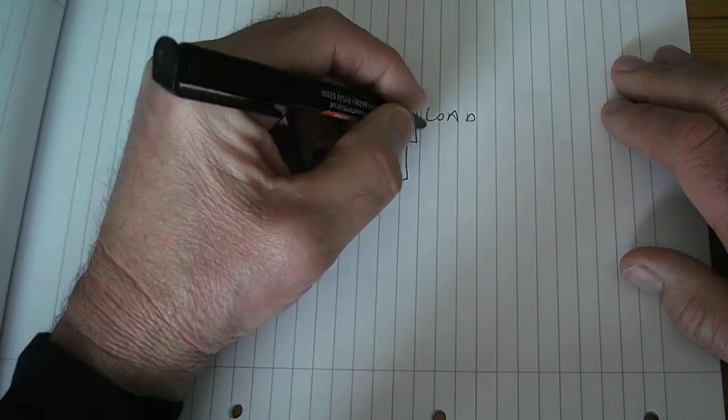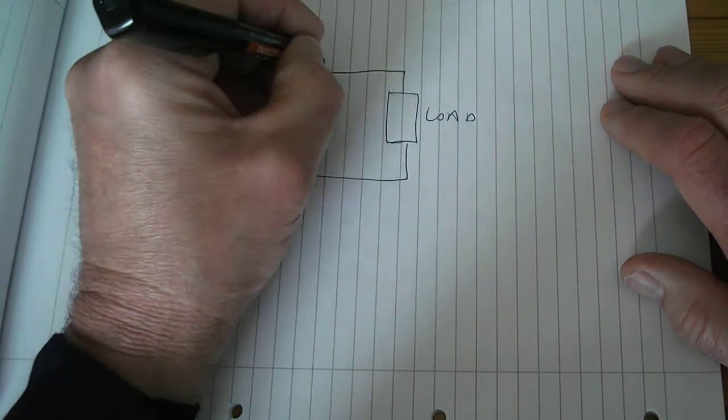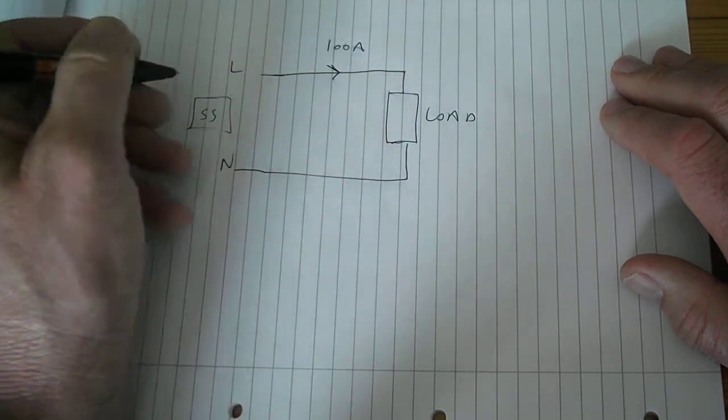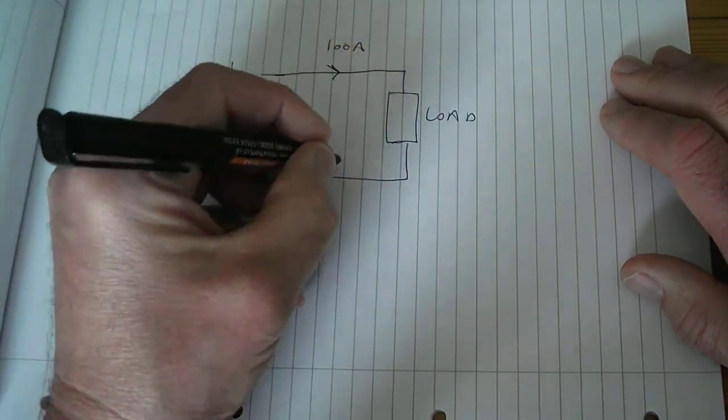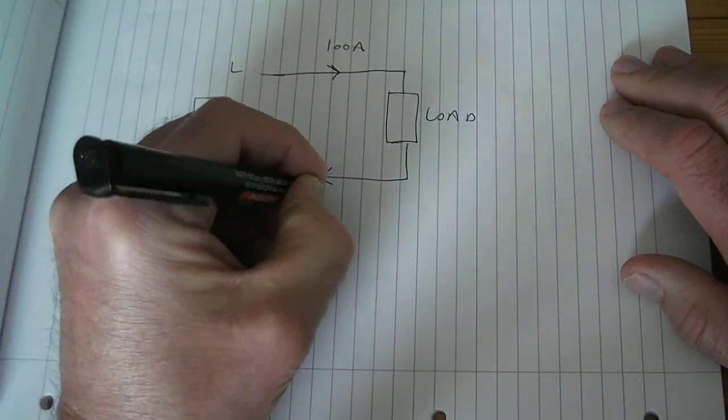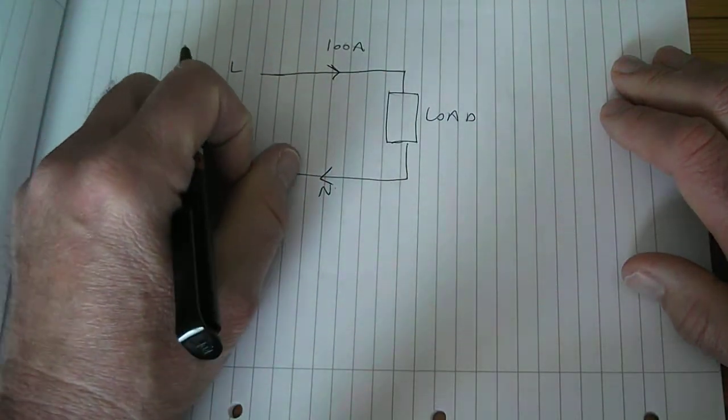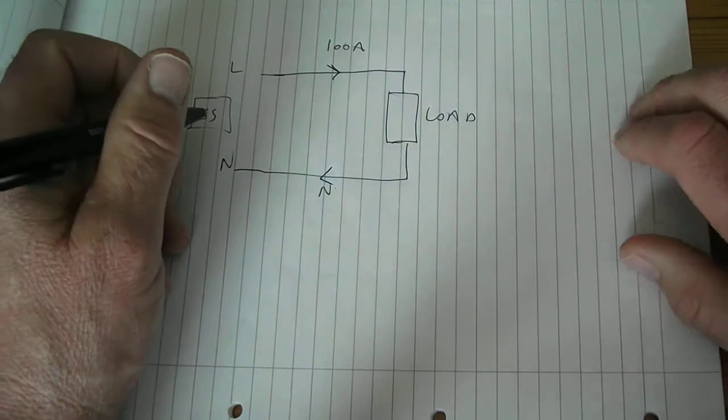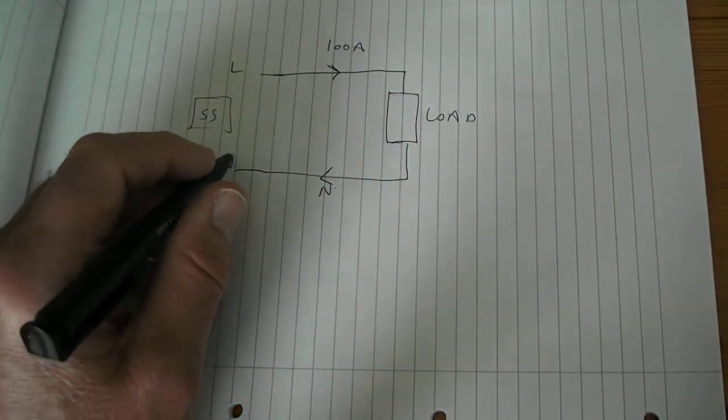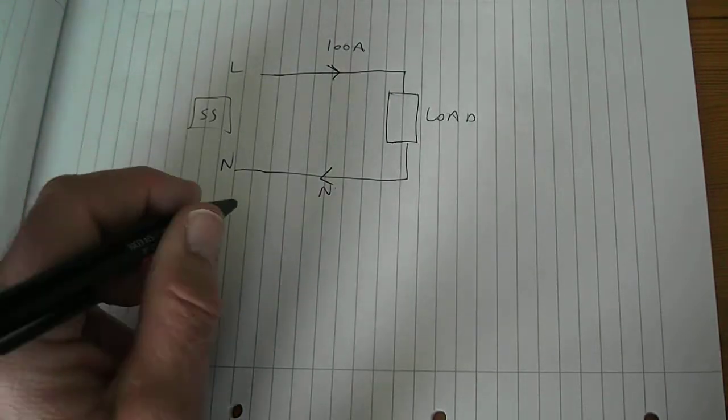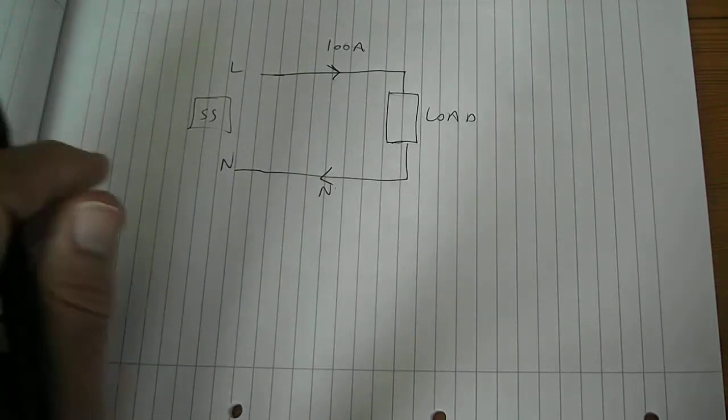And say this current draws, say, 100 amps. So there's 100 amps going down the live and 100 amps coming back to the neutral, backwards and forwards 50 times a second, 50 Hertz. But for the purposes of this demonstration, let's just assume it's going in the same direction.